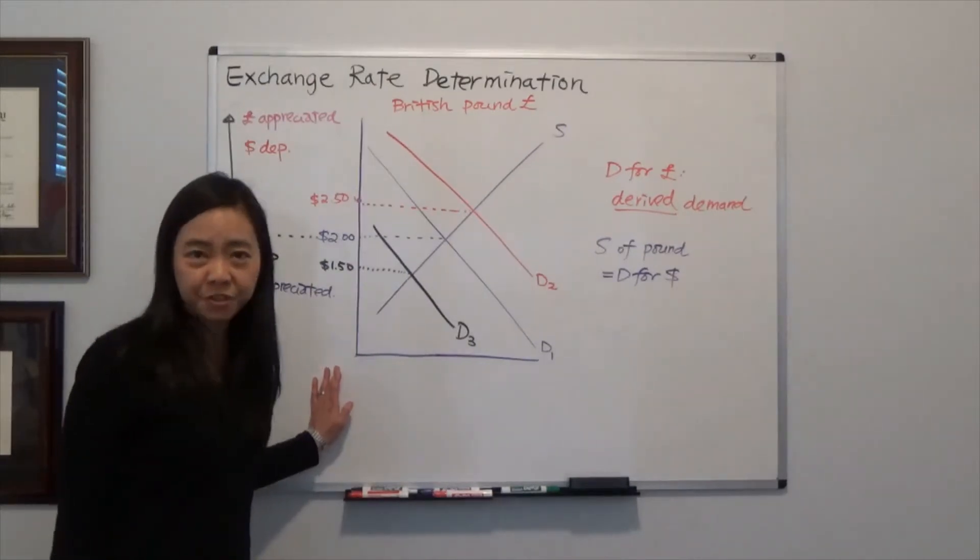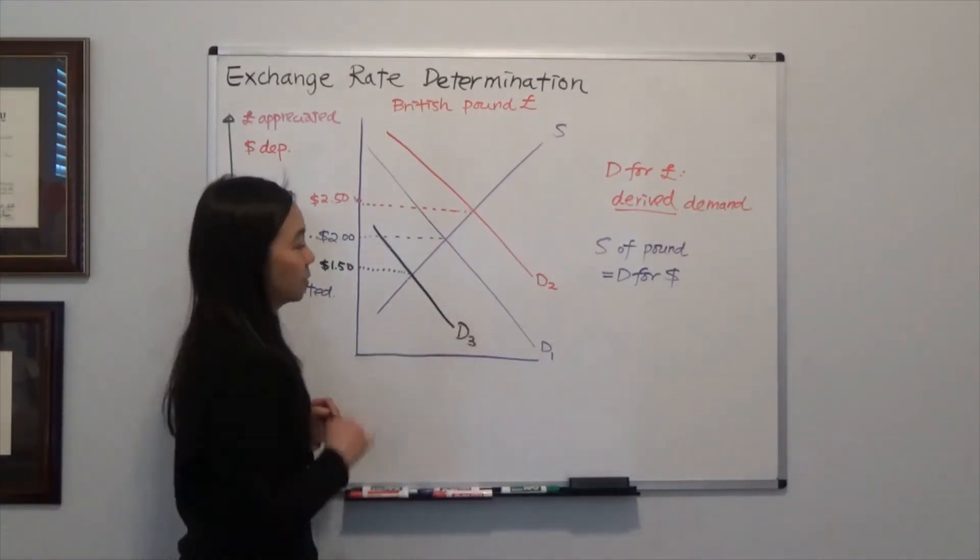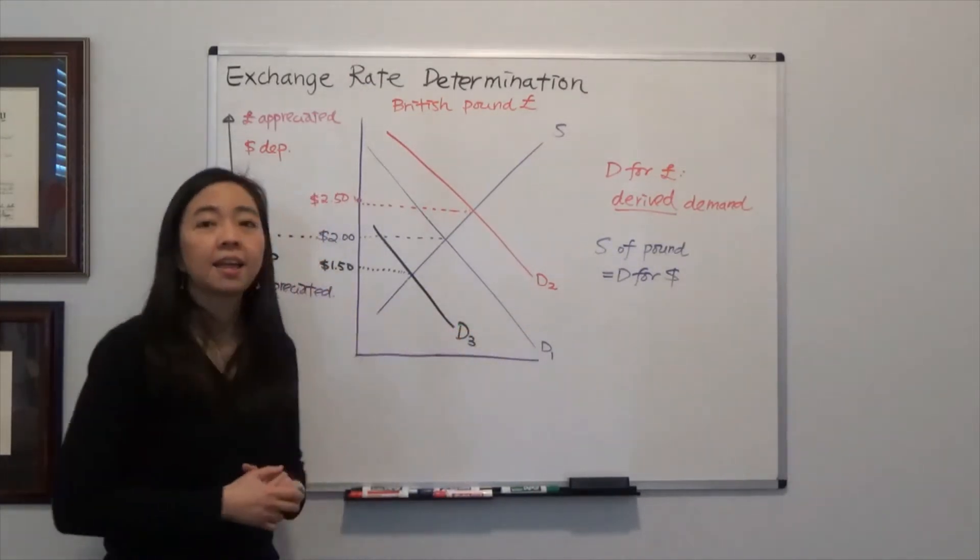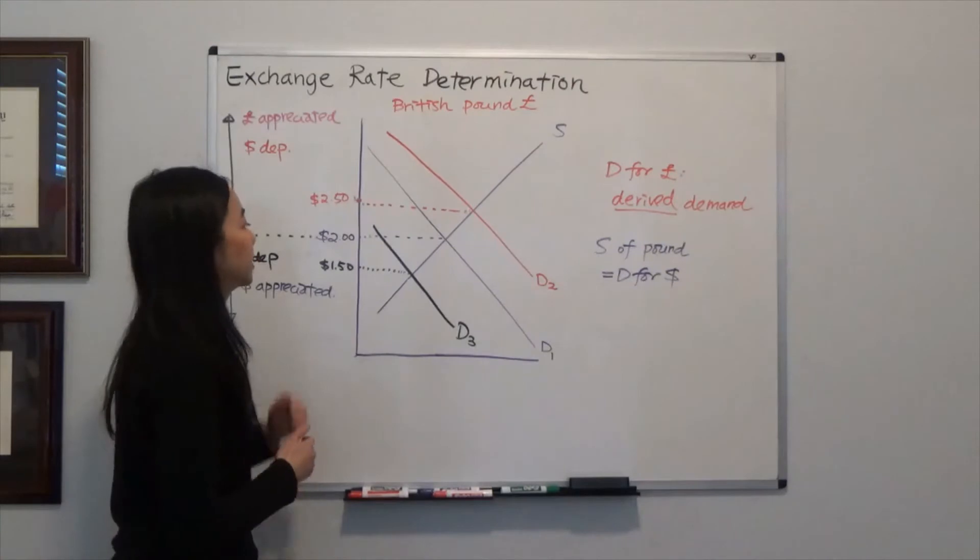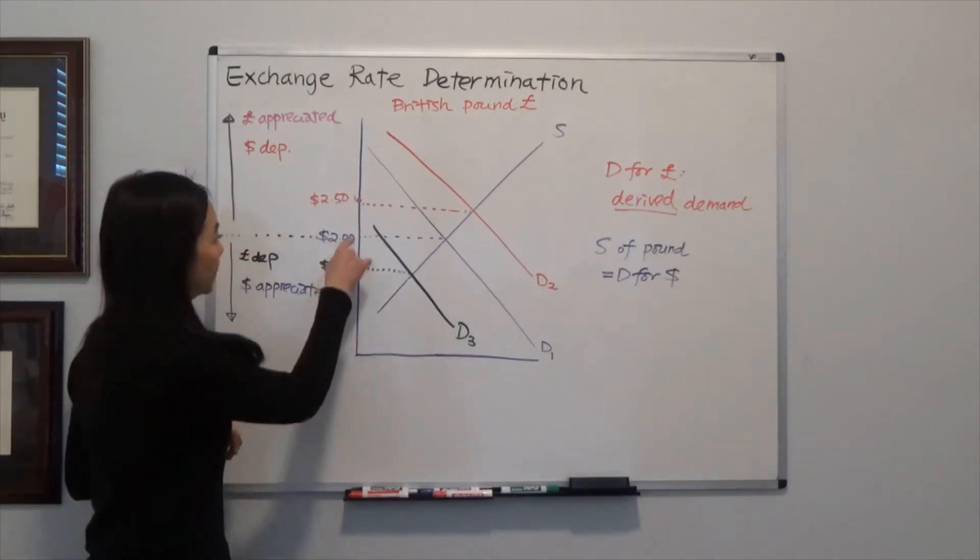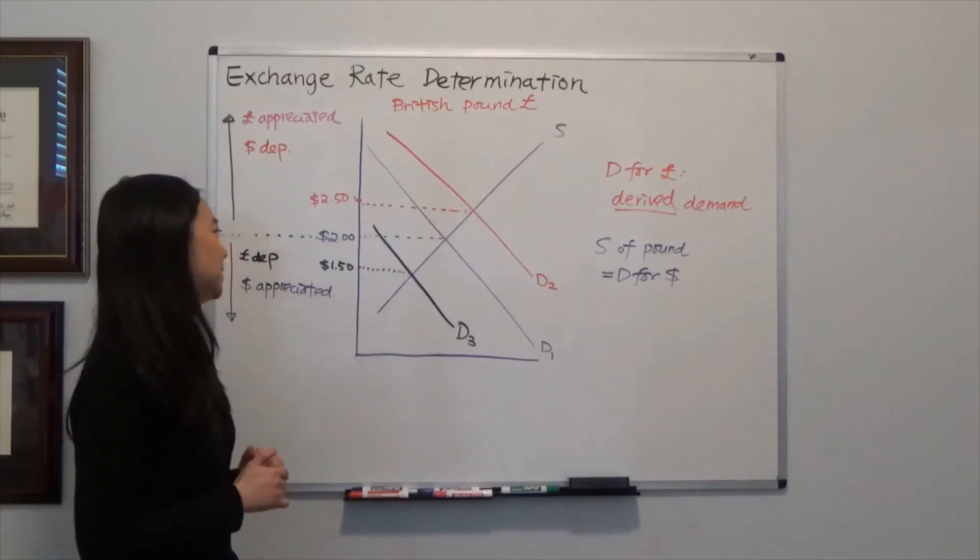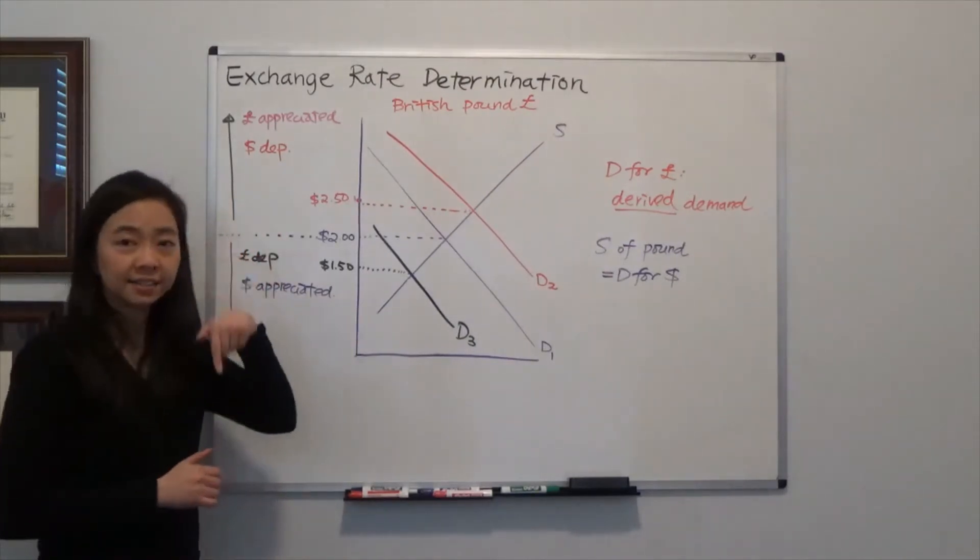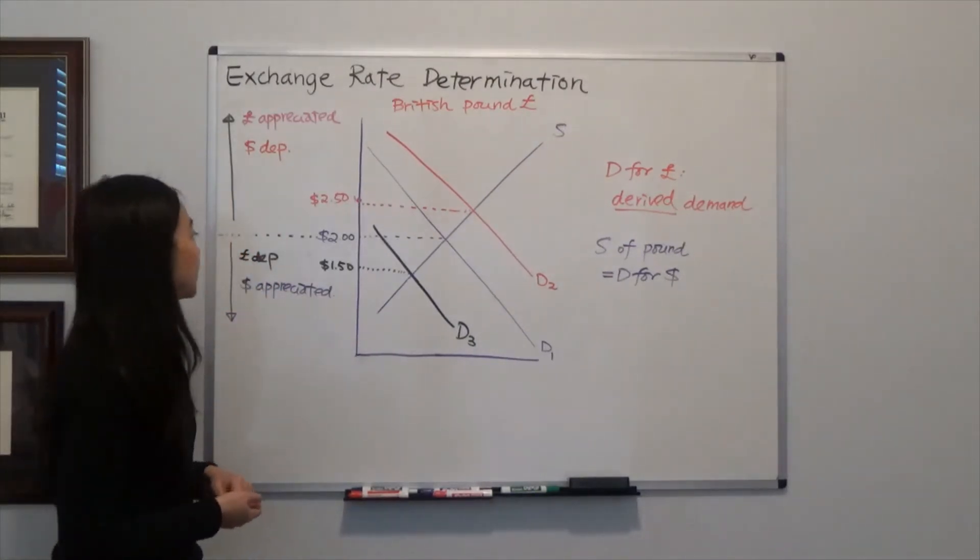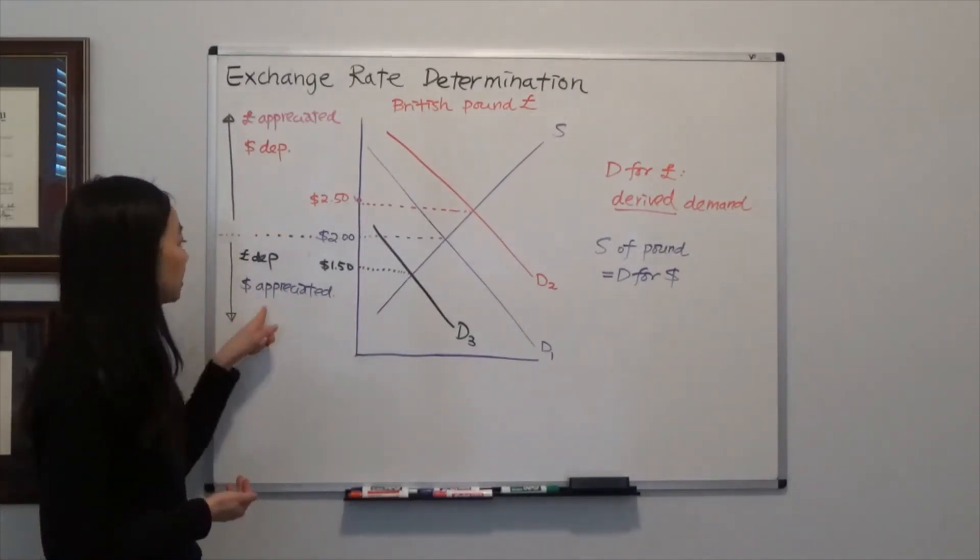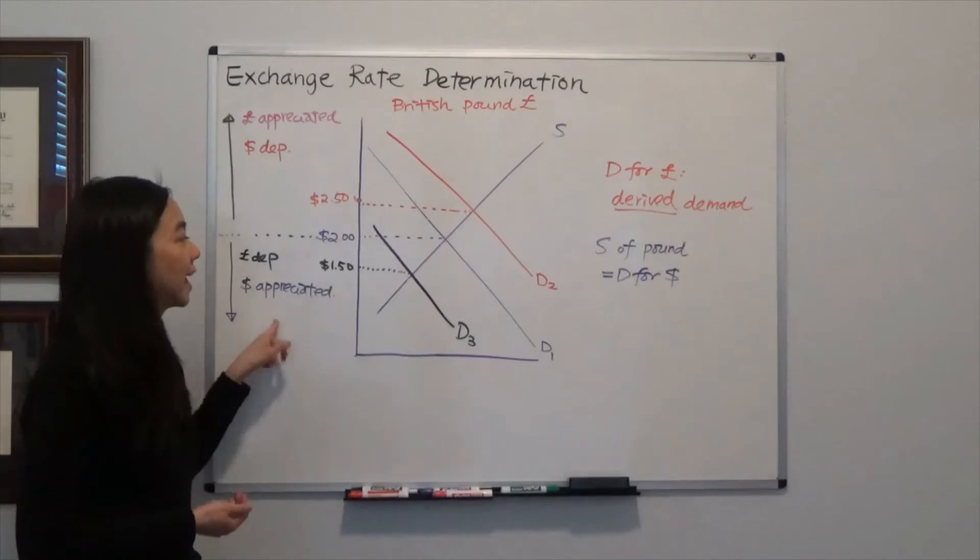If the opposite occurs and the demand for the Pound shifts to the left from D1 to D3, the new equilibrium price of the Pound goes down from two dollars to one dollar and fifty cents. The price of the Pound has gone down, so we say the Pound has depreciated, or the dollar has appreciated against the British Pound.